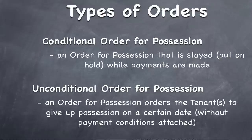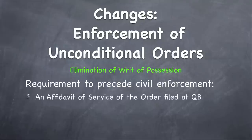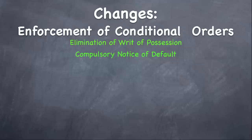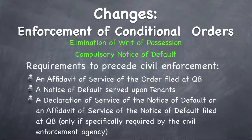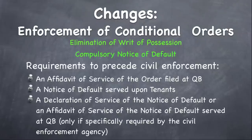The most substantial change was the elimination of the writ of possession as it pertains to unconditional orders, which only leaves a requirement to file an affidavit of service of the order before proceeding with civil enforcement. For conditional orders, the writ of possession has also been eliminated, but the Notice of Default has been introduced — a compulsory document that must be served before a conditional order can be enforced. The required documents prior to civil enforcement are: an affidavit of service of the order, a notice of default served on the tenants, and a declaration or affidavit satisfying the civil enforcement agency.